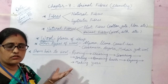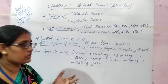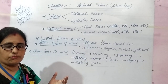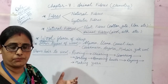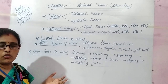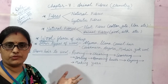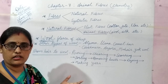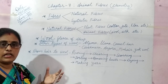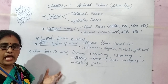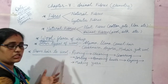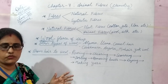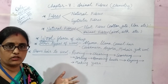Wool is mainly obtained from the fleece of the sheep — the outer hair of the sheep. All wool-yielding animals like sheep, yak, goat, llama, and alpacas contain a thick coat of hair on their body. The fleece of the sheep has two types of fiber: the coarse beard hair and the soft under-hair, which provides the wool for making clothes.